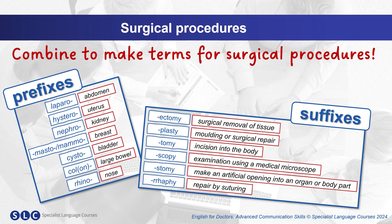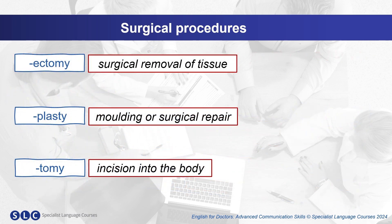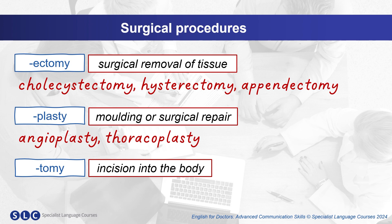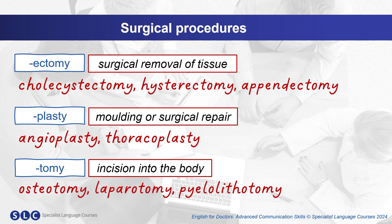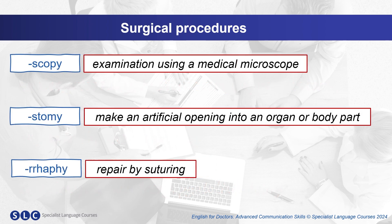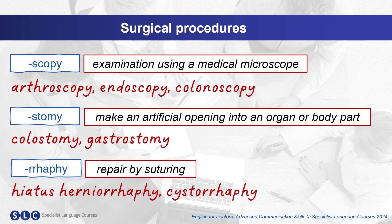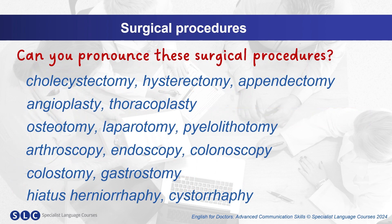And here are some examples. For ectomy we have cholecystectomy, hysterectomy, appendectomy. For plasty we have angioplasty, thoracoplasty. For tomy we have osteotomy, laparotomy, and pyelolithotomy. For scopy we have arthroscopy, endoscopy, and colonoscopy. For stomy we have colostomy, gastrostomy. And for rraphy we have hiatus herniorraphy and cystorraphy. Can you pronounce these terms?